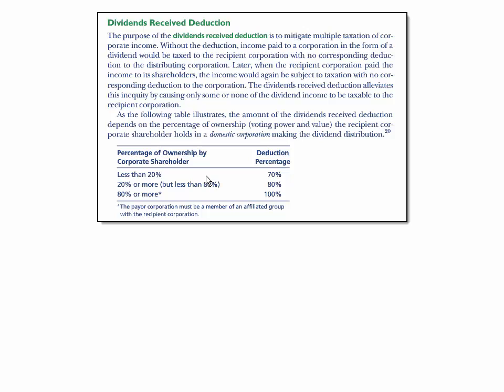If the percentage of ownership by the corporate shareholder is less than 20%, the deduction percentage is 70%. If the percentage of ownership is 20% or more but less than 80%, then it's an 80% deduction. And when the percentage ownership by the corporate shareholder is 80% or more, it's 100%.